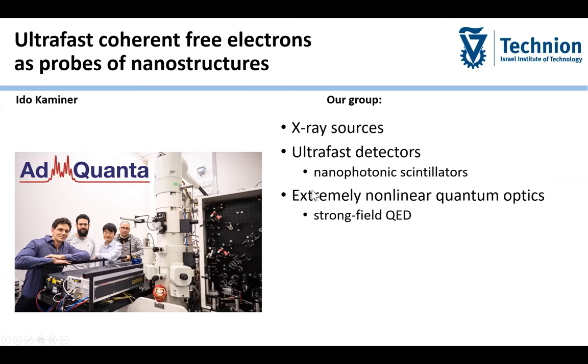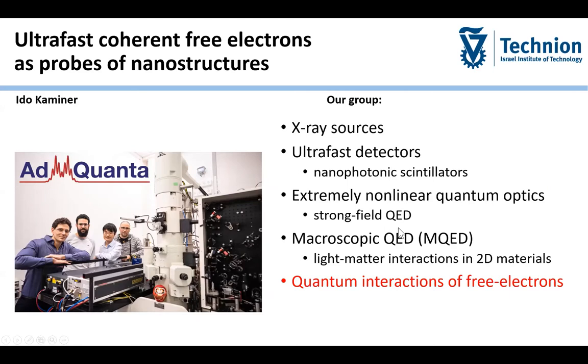So basically, one slide on what we are doing as a group. We are looking into electron physics and more generally effects of quantum electrodynamics and how we can use them for different kinds of applications. We're looking into ways to explore X-ray sources and also explore ultrafast detectors, mostly of X-rays and also of ultrafast electrons. And we use nanophotonics for enhancing those detectors. We're exploring effects in quantum optics, especially in areas of strong field quantum electrodynamics and how, for example, harmonic generation can be created with quantum optical phenomena. And we develop the formalism of microscopic quantum electrodynamics to study light-matter interactions in novel materials, especially in 2D materials. And a lot of those topics also overlap with ideas of quantum interactions of free electrons.